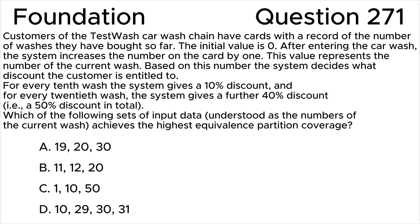ISTQB foundation level question 271. Customers of the Test Wash car wash chain have cards with a record of the number of washes they have bought so far. The initial value is zero. After entering the car wash, the system increases the number on the card by one. This value represents the number of the current wash.